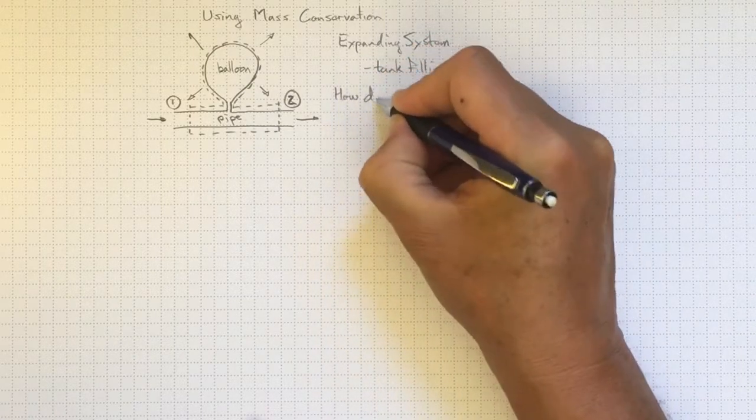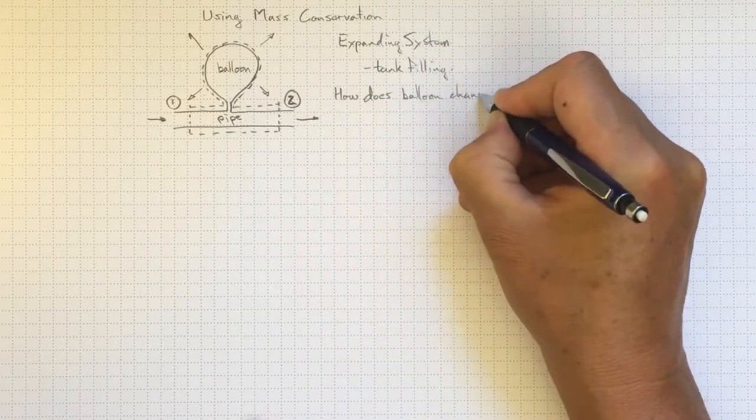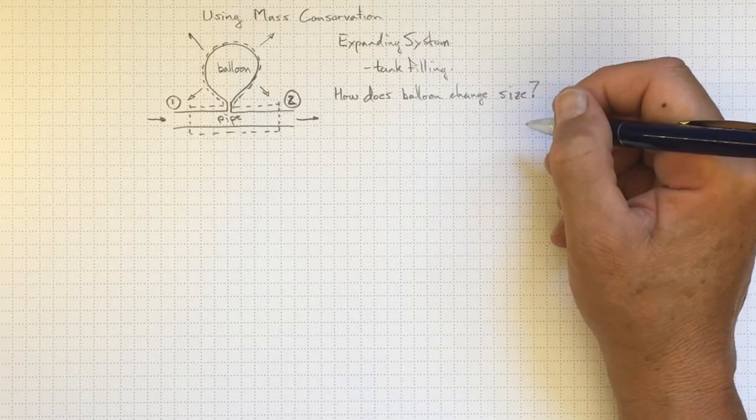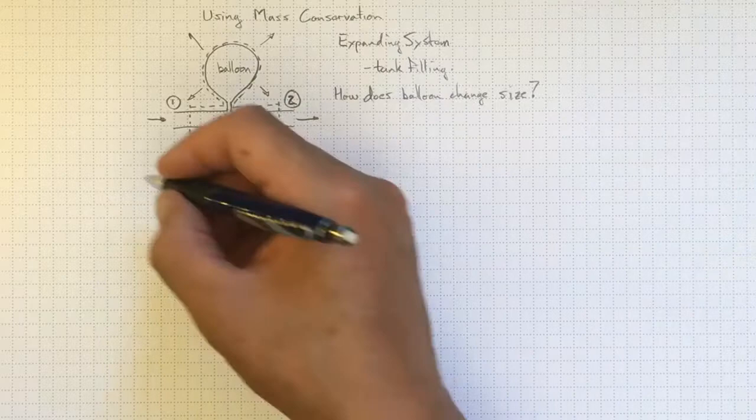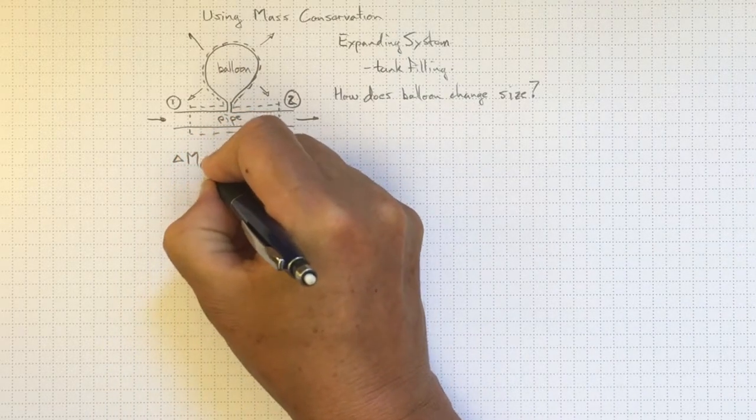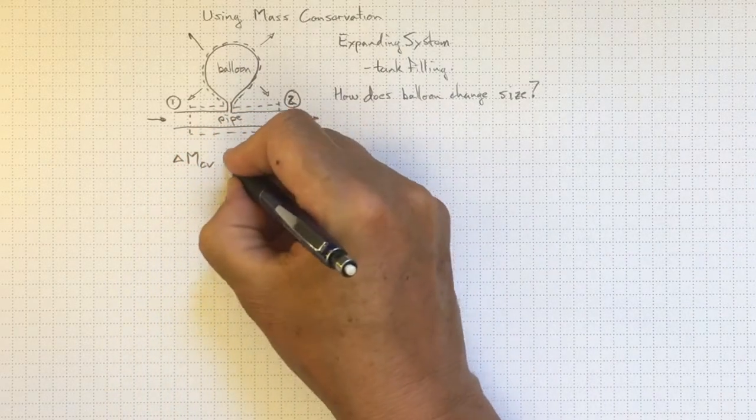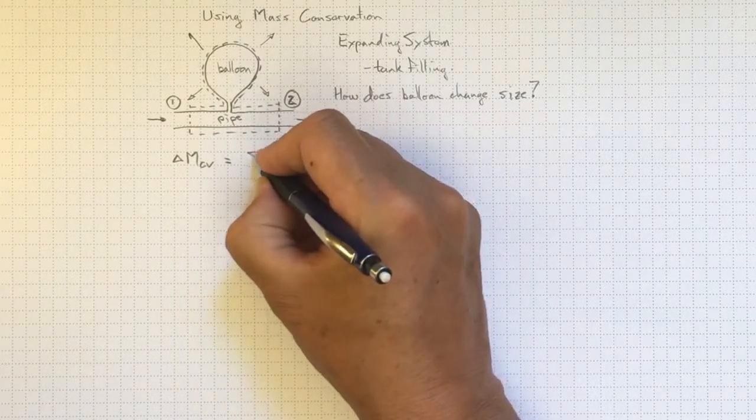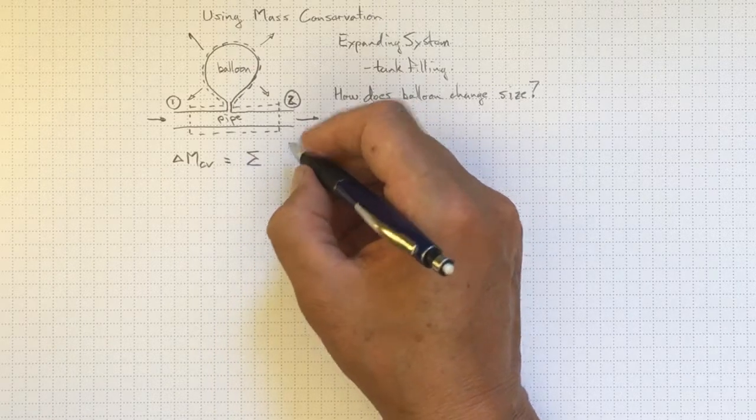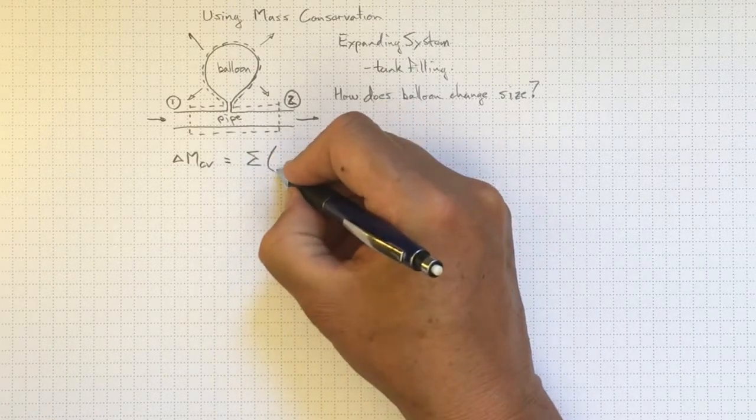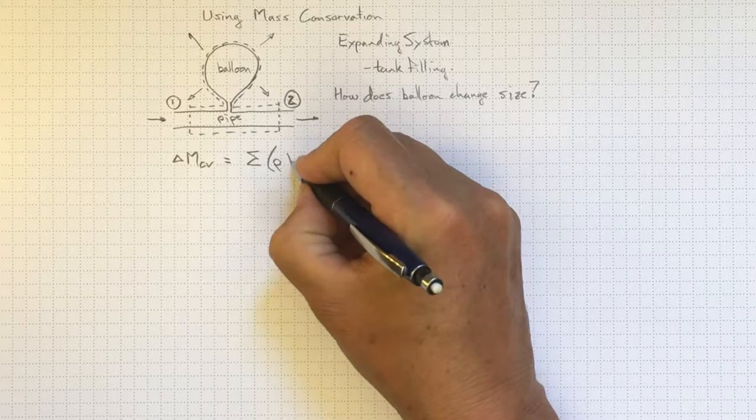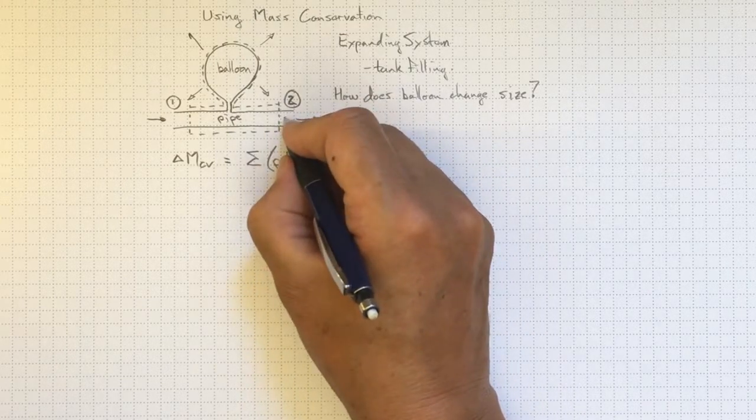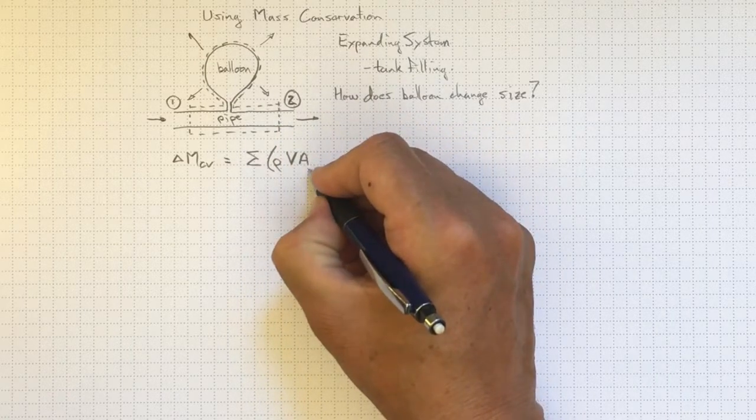And the question we might ask is, how does the balloon change size? We can apply conservation of mass. We can look at the change of the mass contained in the control volume must be equal to, and in this case we can use just a summation over the inlet and the outlet. Summation of all of the volume flows in VA where this is a V average velocity perpendicular to the surface area.